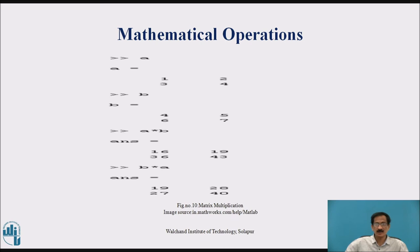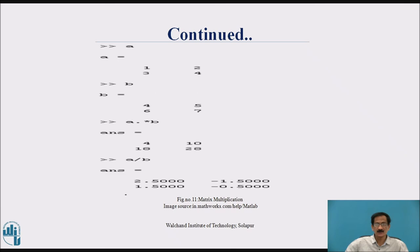This is the mathematical operation: a and b are given, multiplication of a and b and then multiplication of b and a. Again a and b are given. A dot star b after executing this command will multiply each and every element of a with each and every element of b.